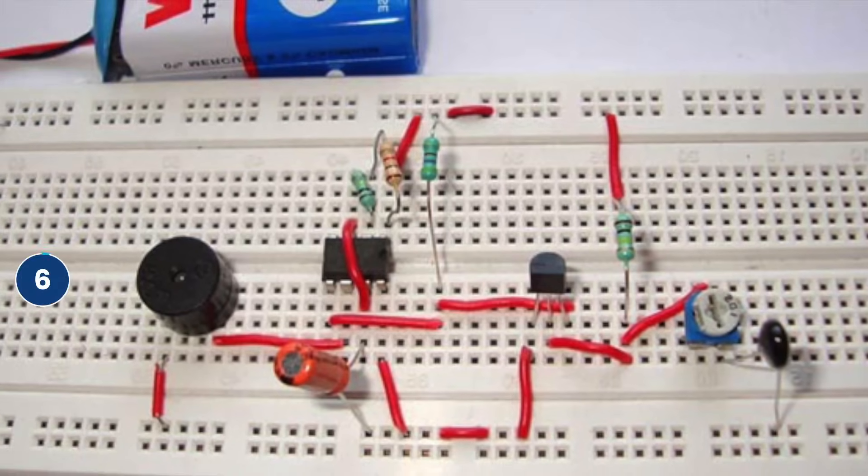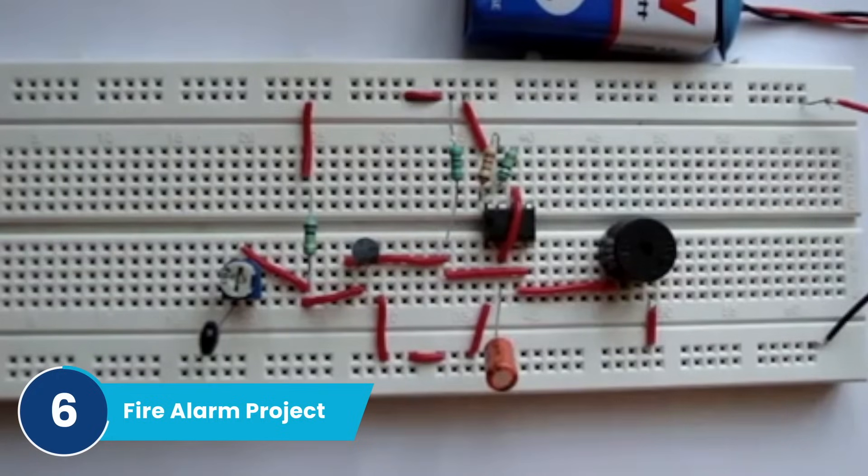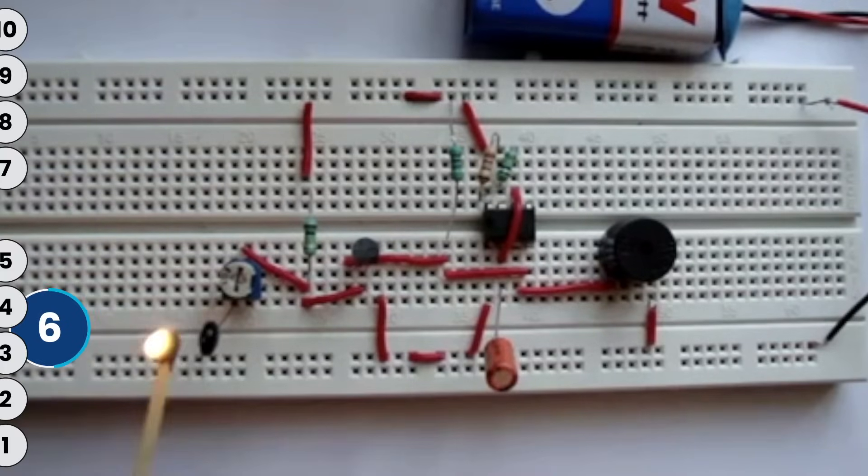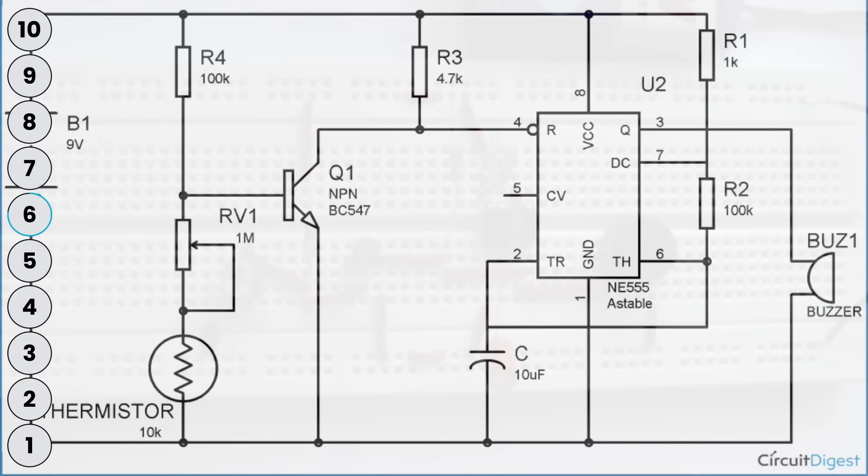The next one on our list at number six is the legendary fire alarm project. So when this circuit detects a fire, it does this. Yes, this can also be built on a breadboard with just a 555 timer, a thermistor as your main sensor, a BC547 transistor, and a buzzer.